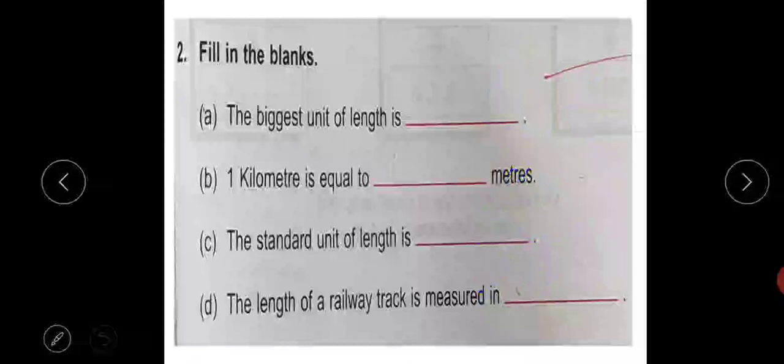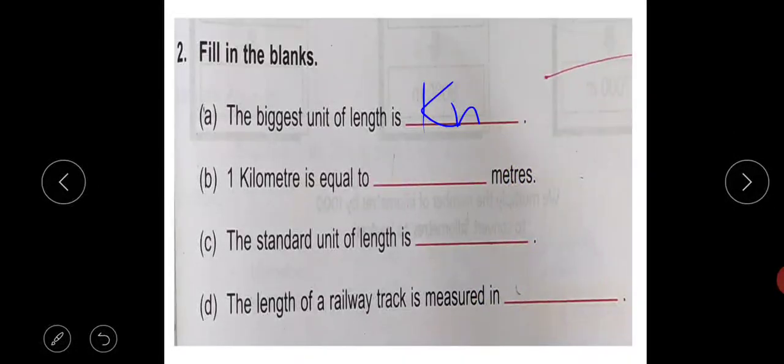Now question number two: fill in the blanks. The biggest unit of length is kilometer. One kilometer is equal to one thousand meters. The standard unit of length is meters. The length of a railway track is measured in kilometers.